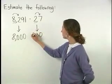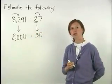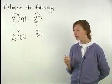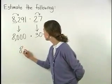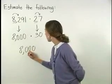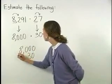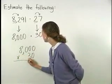So we have 8,000 times 30. Now, we line up 8,000 and 30 with the larger number on top to multiply.